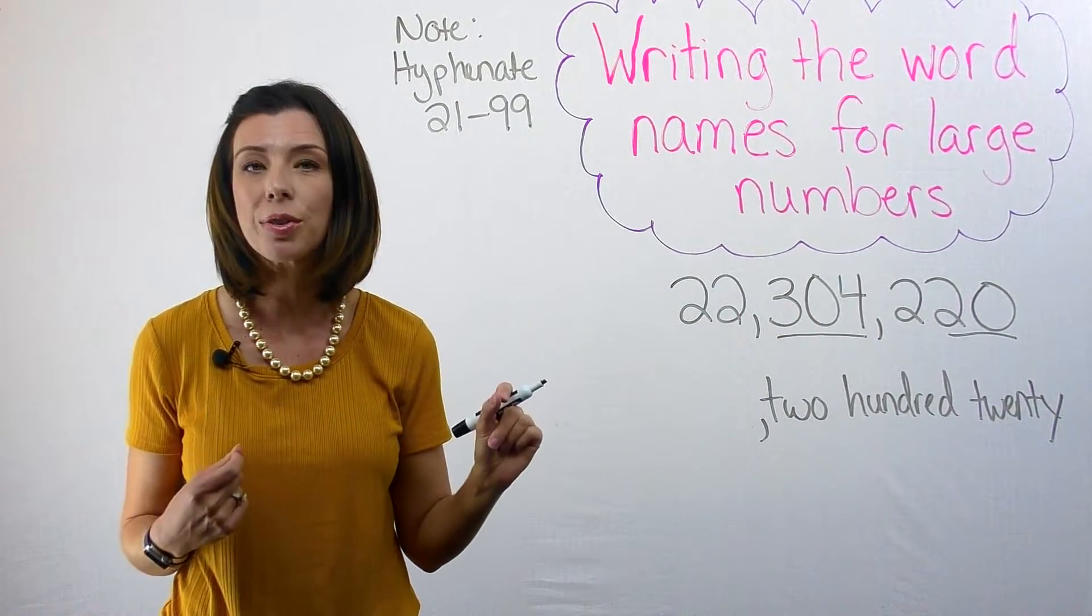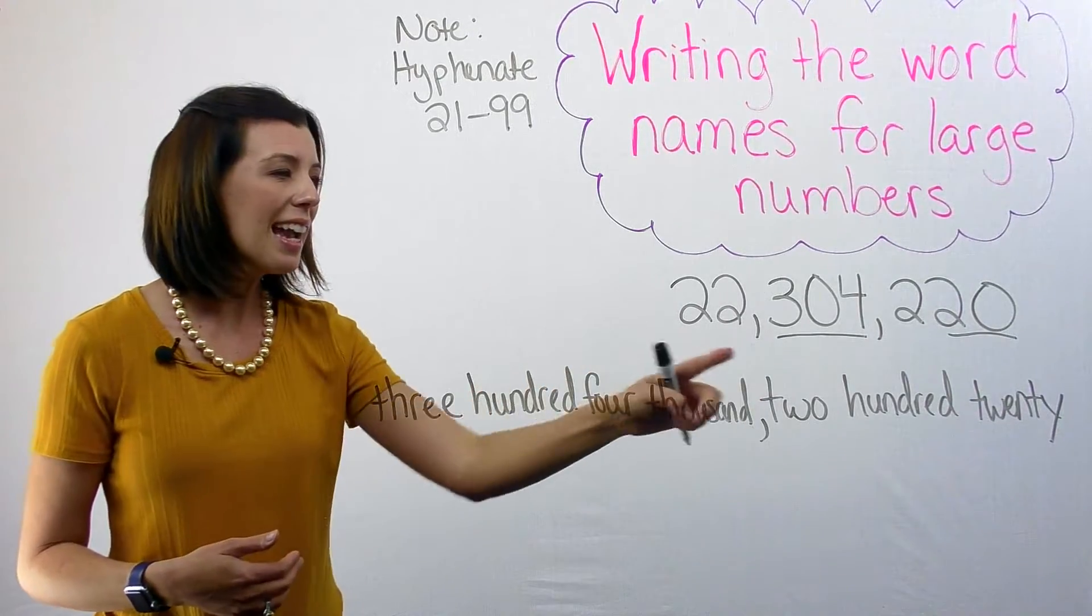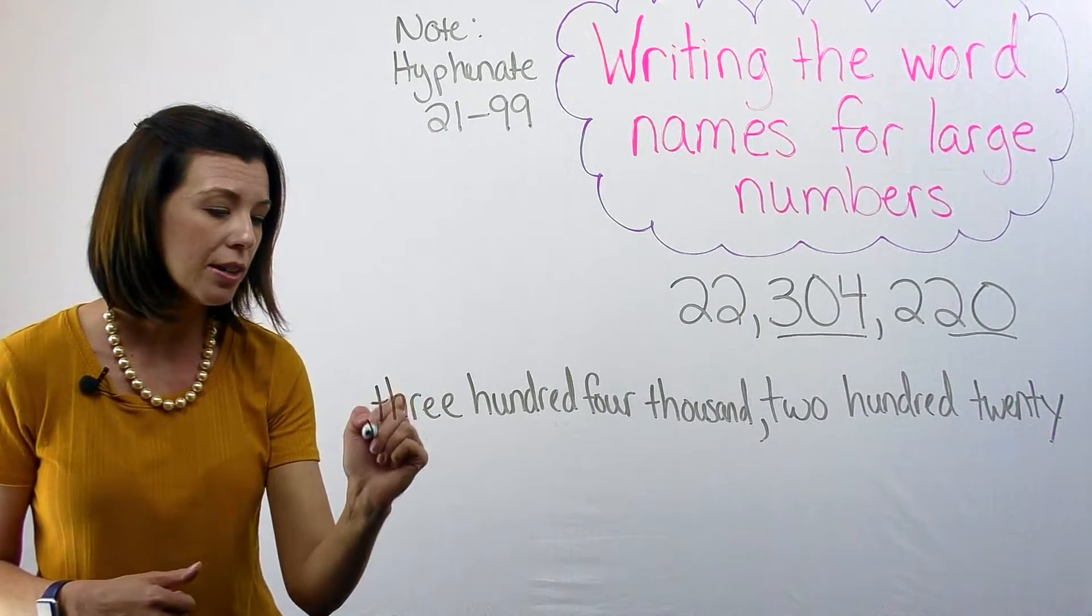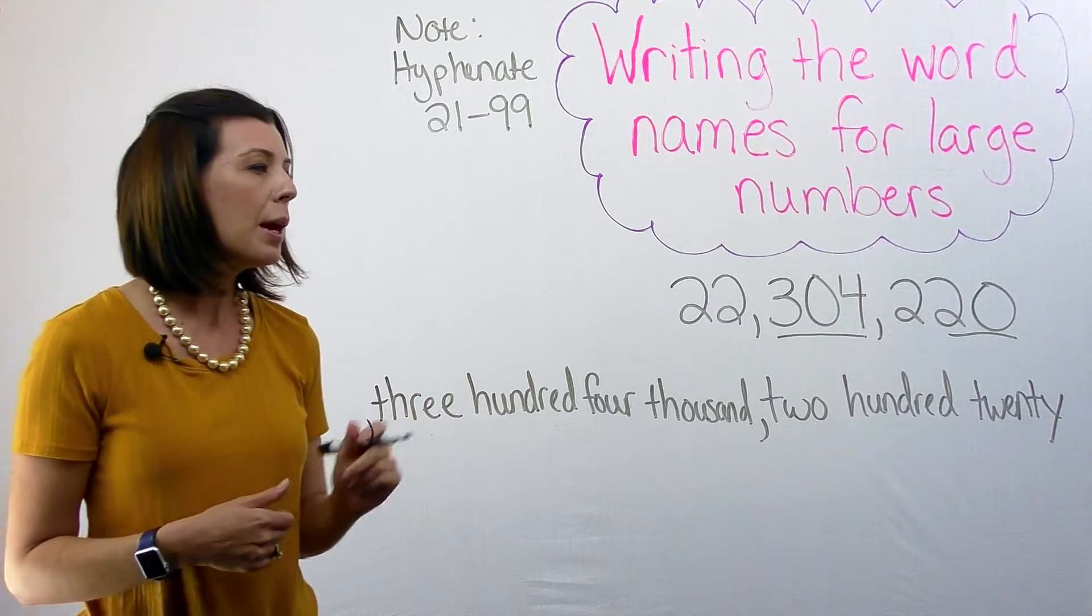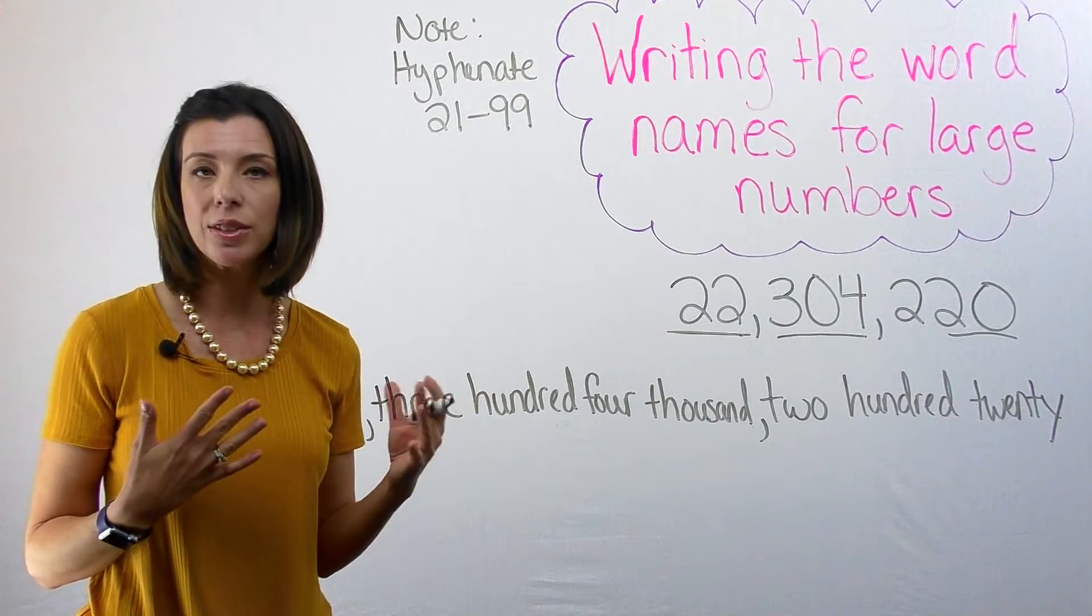Don't forget, again, this is the thousands chunk. Again, I have another comma. So I'm going to go ahead and squeeze that in right here so that I don't forget about it. My last chunk, this is going to be the millions chunk.